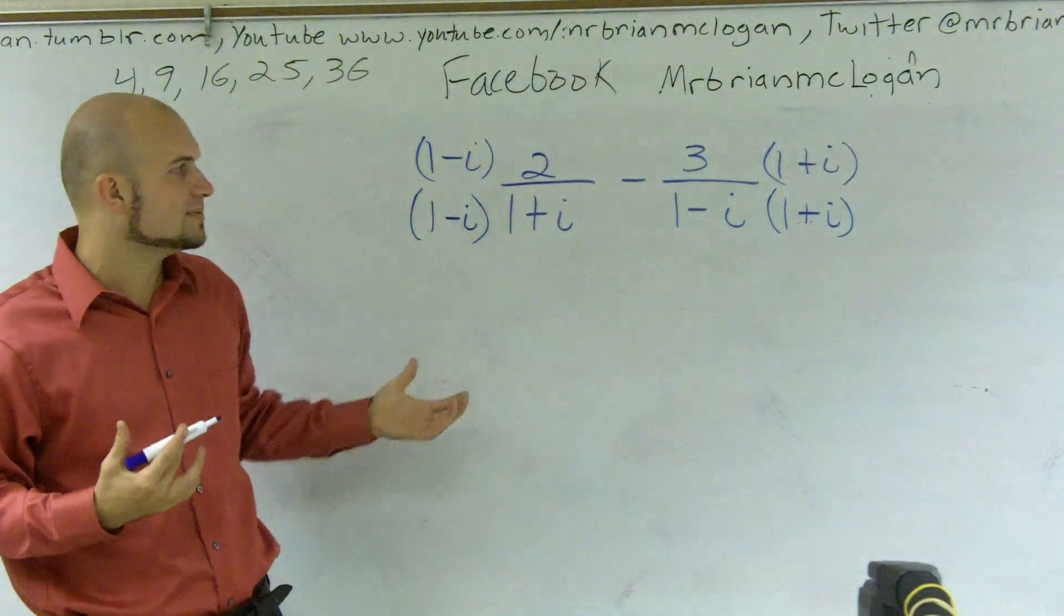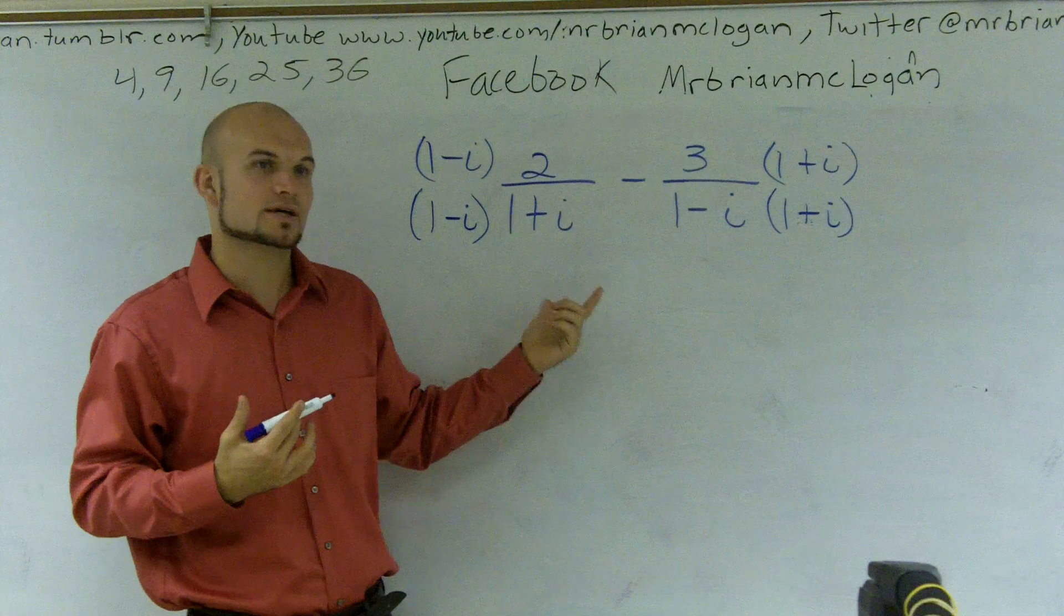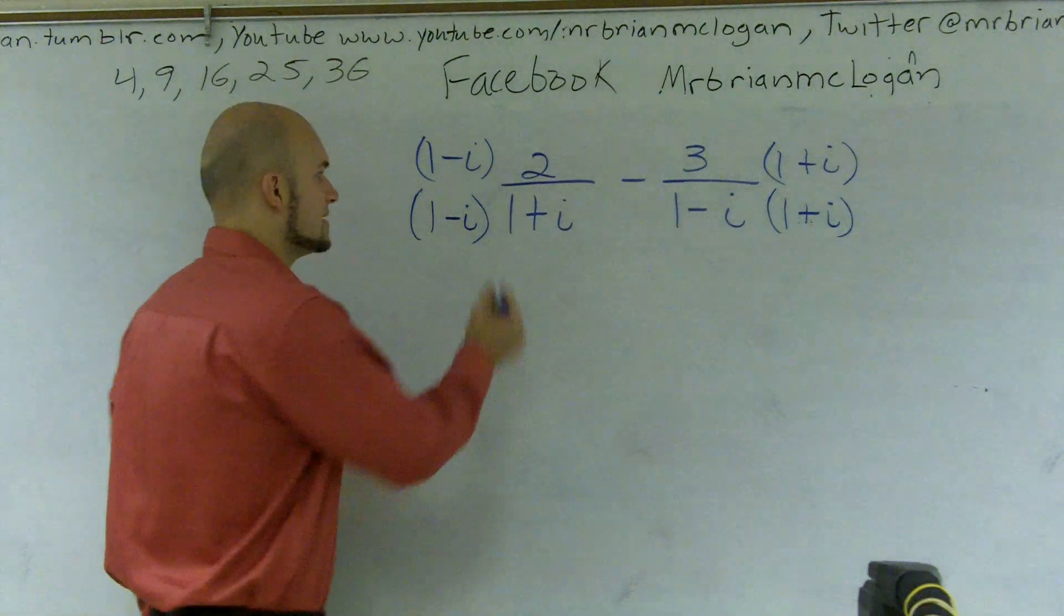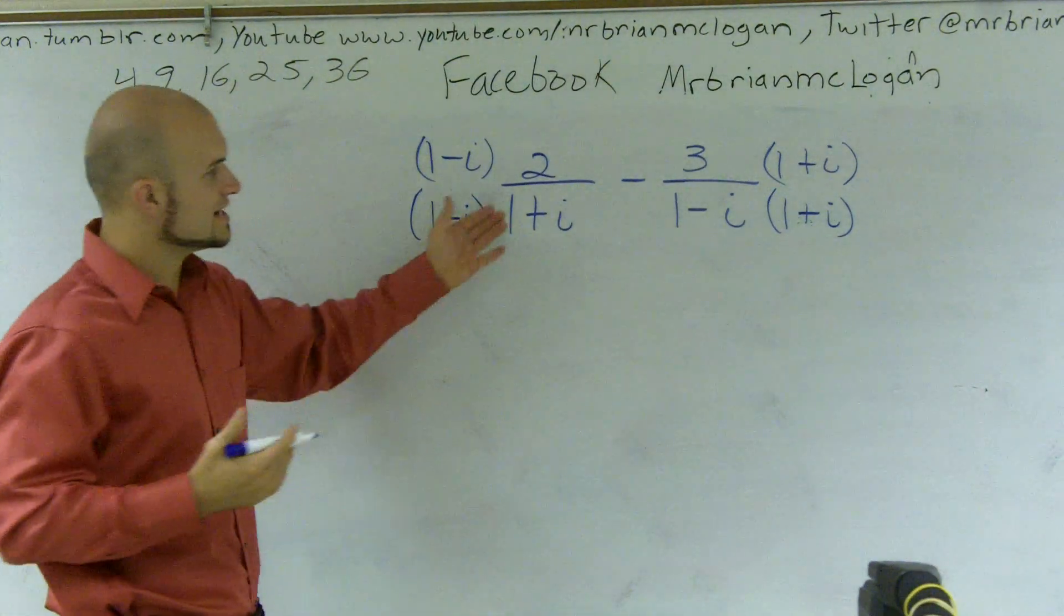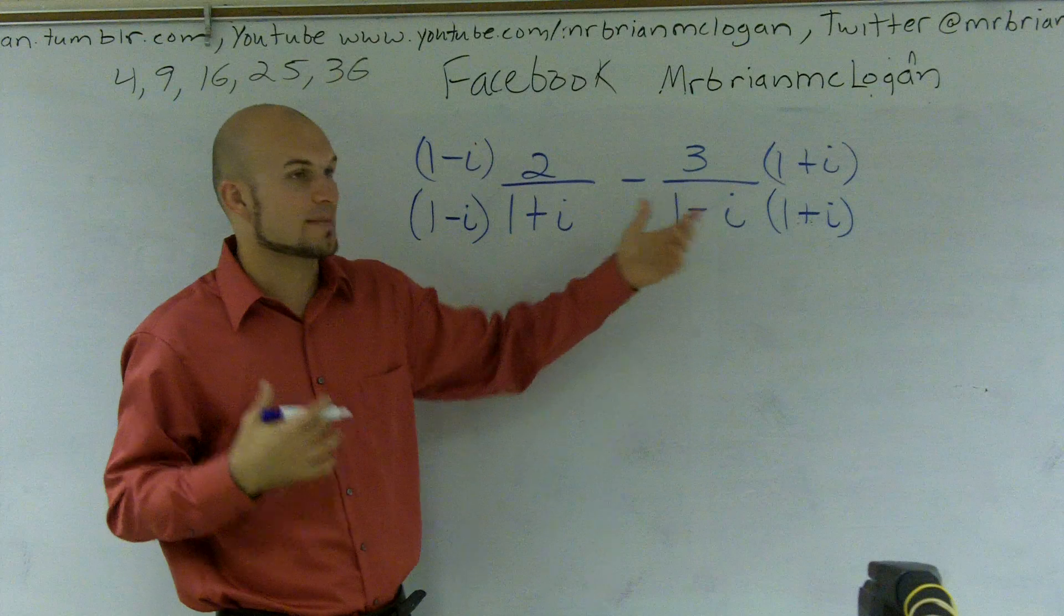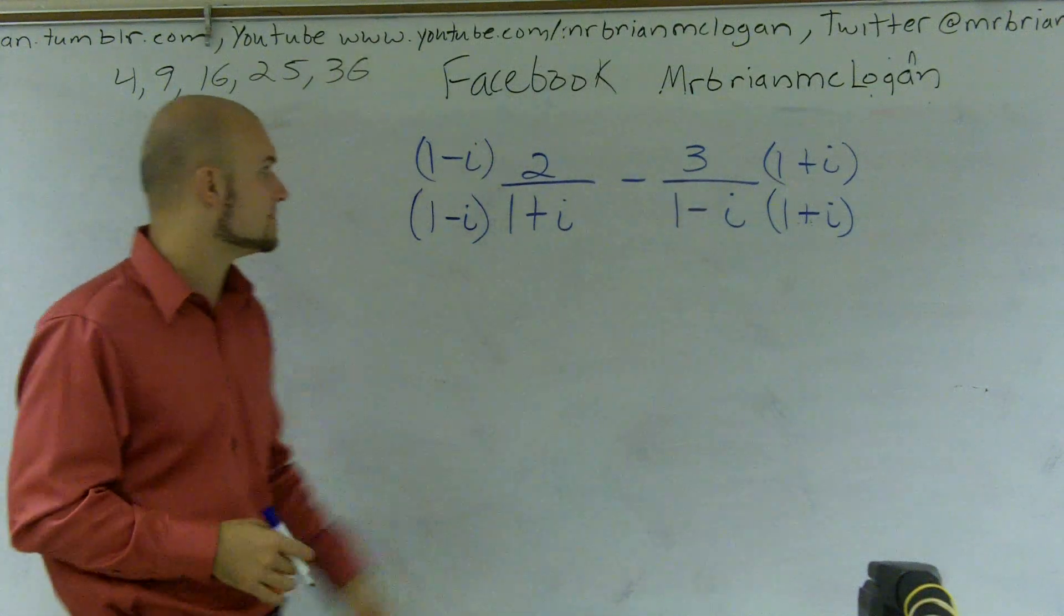Right? So a lot of times a simple technique is to multiply by the other denominator to get them to be a common denominator. So this is very nice because by multiplying by the conjugates, I'm actually also finding the common denominator so I can combine them.